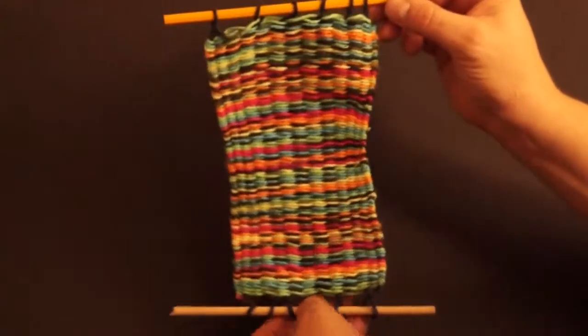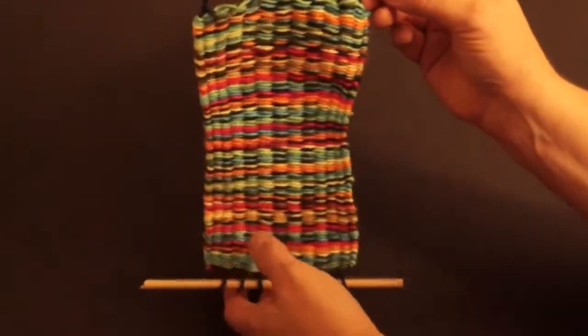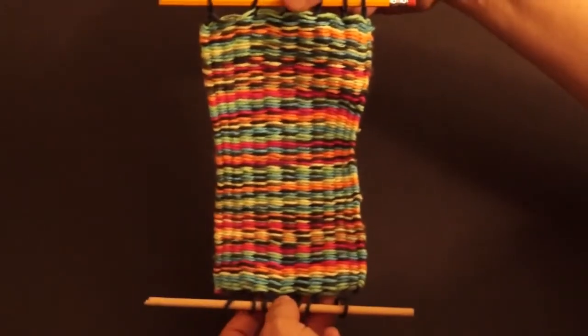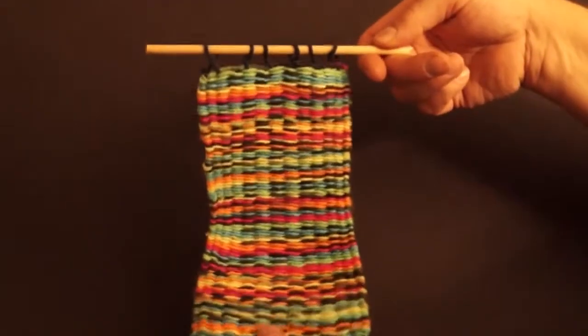So it's looped around there. Like I said, I alternated the direction that the loops are turned, and that just helps keep it from sliding off as easy. Okay, let me turn it this way, and you can see what the dowel rod looks like at the top.